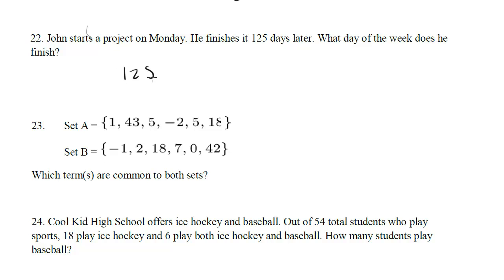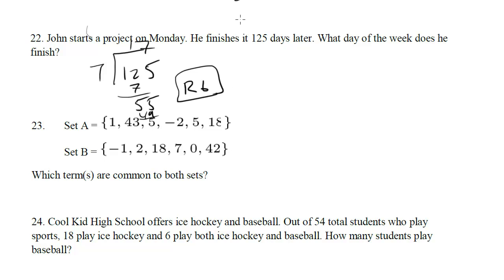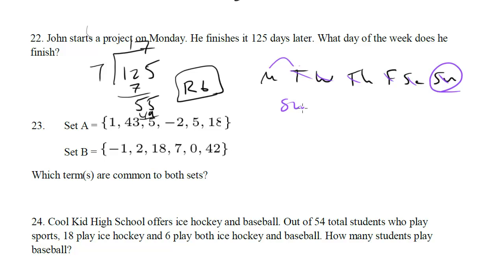If we divide 125 by 7, we get 17 with a remainder of 6 — because 7 times 7 is 49, leaving a remainder of 6. All the other days from 1 to 119 are just weeks that cancel out and return back to Monday. So what we care about is: starting from Monday, what is six days later? Monday, Tuesday, Wednesday, Thursday, Friday, Saturday, Sunday — counting 6 days, the answer is Sunday.